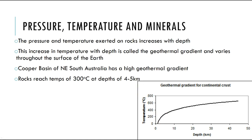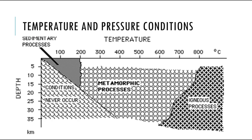These hot rocks should be investigated as a source of clean energy, because we can use hot rock technology to create energy through steam. Because of different pressure and temperature conditions, we can identify where we would likely see minerals associated with particular rock types. Sedimentary rocks usually occur only in the upper part of the crust under very low temperature and pressure. As we get into higher pressures and temperatures we move into metamorphic processes, and then as we heat over the melting point of minerals we go into igneous processes.